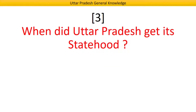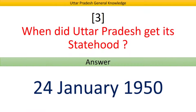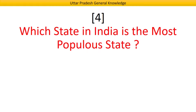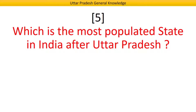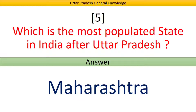When did Uttar Pradesh get its statehood? Answer: 24 January 1950. Which state in India is the most populous state? Answer: Uttar Pradesh. Which is the most populated state in India after Uttar Pradesh? Answer: Maharashtra.